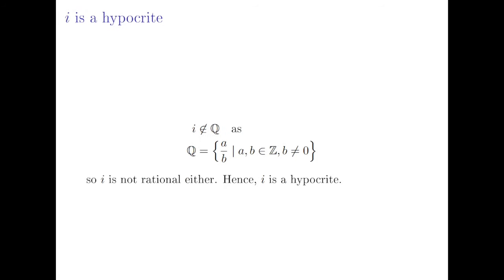However you may have noticed that i is not a rational number either, as the rationals are all the numbers a over b where a and b are integers and b is not equal to zero. You can't express i as the fraction of two integers, so i is not rational either. Hence, i is a hypocrite. Thank you for watching.